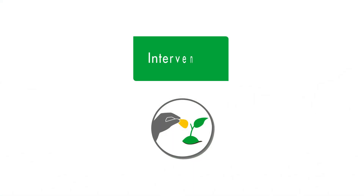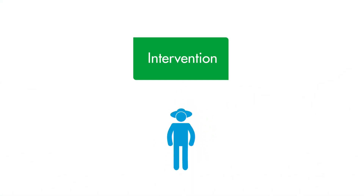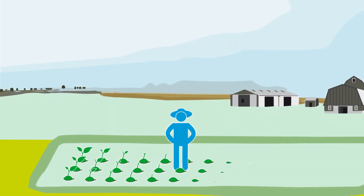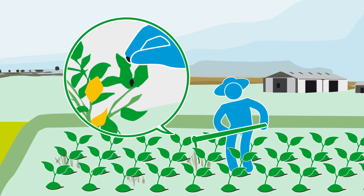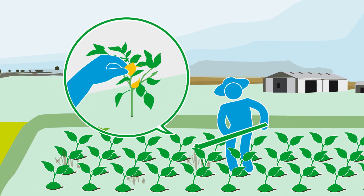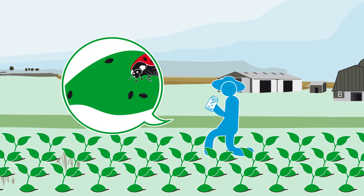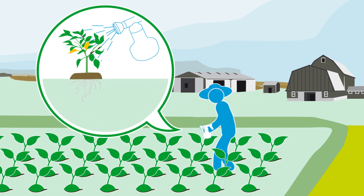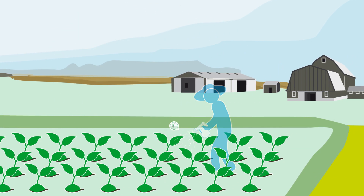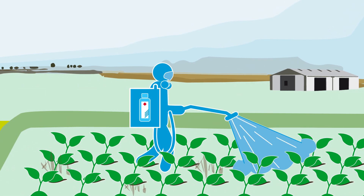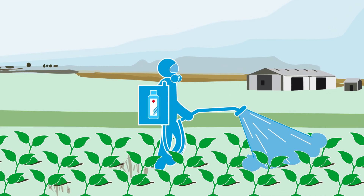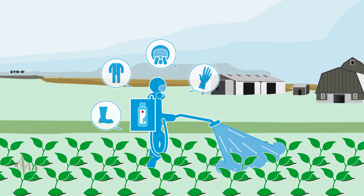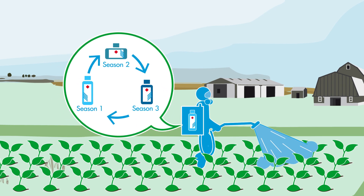Then, if intervention is required, the producer must consider a combination of mechanical, biological, and chemical methods, such as mechanical or physical removal of pests, diseased plant parts, and weeds, the use of natural predators or pheromone traps, the use of natural products like oils and botanical products, and the use of synthetic chemical plant protection products. Where agrochemical applications are made, optimal application techniques must be followed and agrochemical resistance prevented, for example, by the rotation of active ingredients.